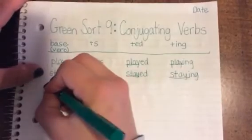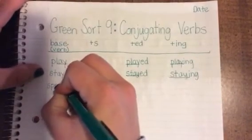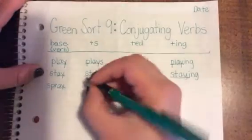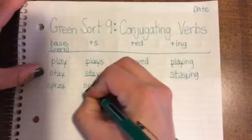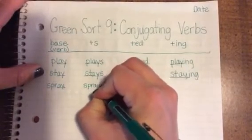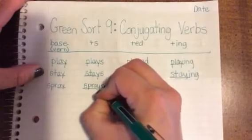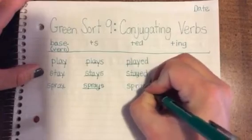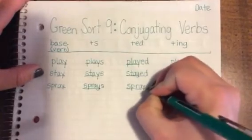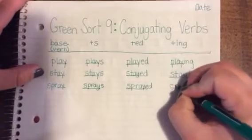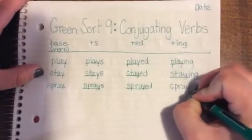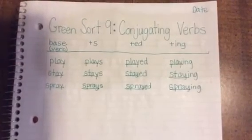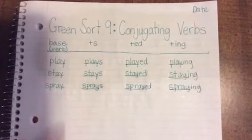Same for the word spray. Since it has the ay, or the vowel before the y, we just write the base word spray and then add the ending. So: sprays, sprayed, and spraying. This again is the first section where the base word ends with ay.